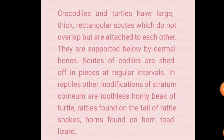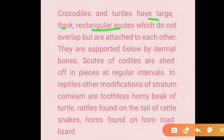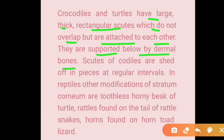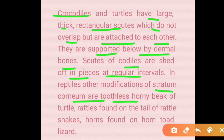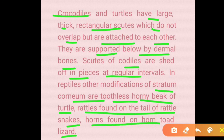Other modifications of the stratum corneum in reptiles include the toothless horny beak of turtles, the rattles found on the tail of rattlesnakes, and the horns found on horned lizards.